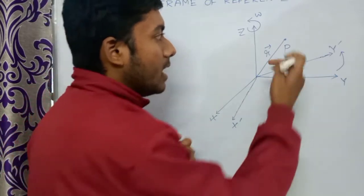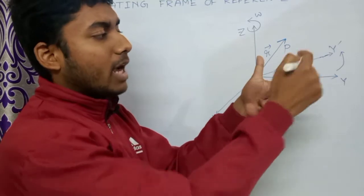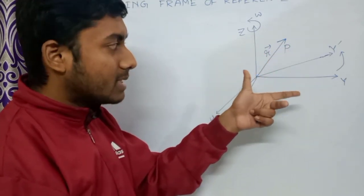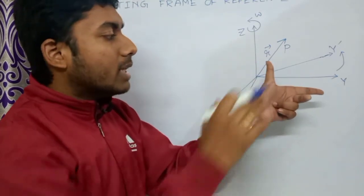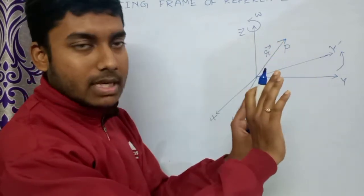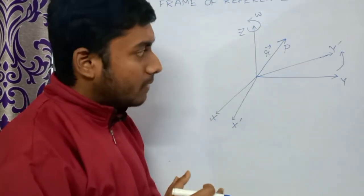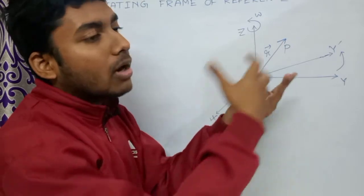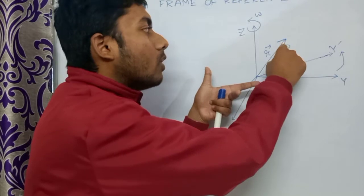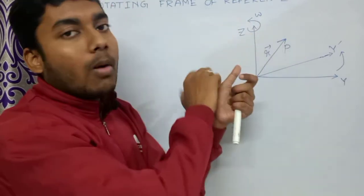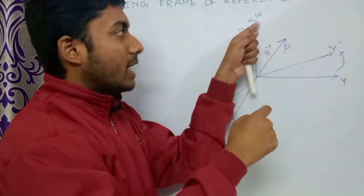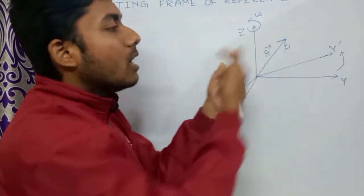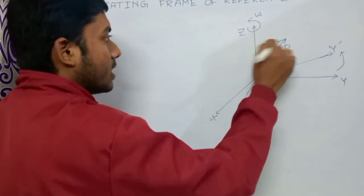So we have one fixed frame X, Y, Z and another rotating frame with a fixed Z axis. Now suppose we consider a point P, and the position vector of that point P is as shown. As this frame — the prime frame of reference — is rotating, the observer in the rotating frame, that is in the prime coordinates, will observe that this point is rotating in the opposite direction.